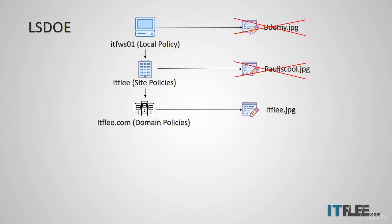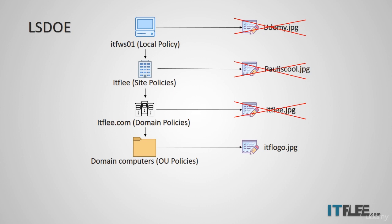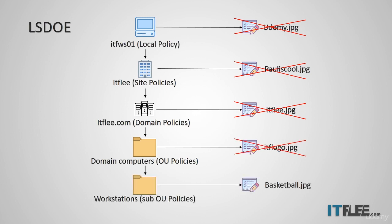Your computer updates its group policy by first applying the local policy with Udemy.jpg, then the site policy with pauliscool.jpg, then the domain policy with itflea.jpg — the final setting in place. If we also had a GPO assigned to the OU domain computers configured with ITF logo as the background, it would take precedence over all the others. And if there's a sub-OU called Workstations with basketball.jpg assigned, it would take effect over all GPOs above it.